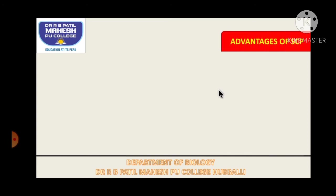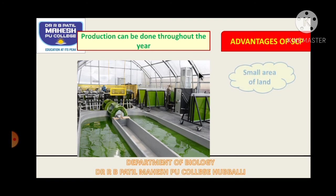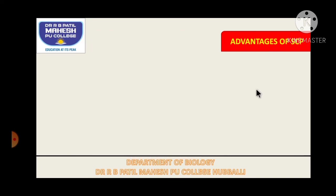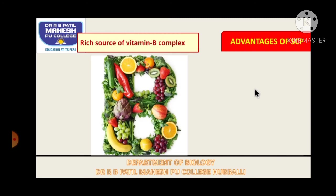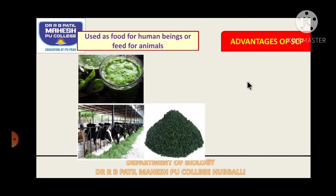The advantage of single cell protein is that we can produce it throughout the year. For rice, wheat, and jowar we can only grow them in a particular season, whereas single cell protein can be cultured 24/7 in any season, in a very small area of land, using waste water — we do not need hygienic water. We can get a rich source of vitamin B complex, and it is used as food for human beings as well as to feed cattle.